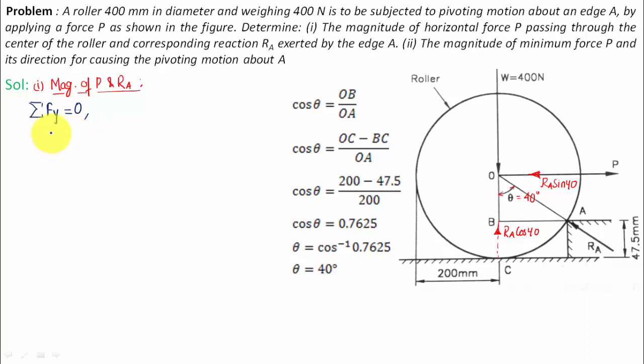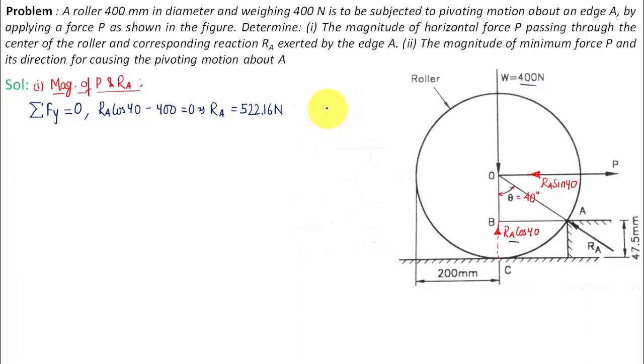As soon as I use this, this is in the upper direction positive and this 400 newtons is in the downward direction negative. So RA cos 40 minus 400 is equal to zero, and if you try to solve this equation, RA will be equal to 400 divided by cos 40, which will be equal to 522.16 newtons. So that's the value of RA, we have got this.